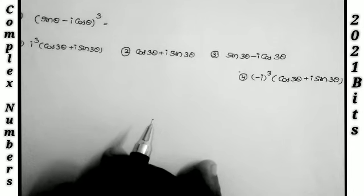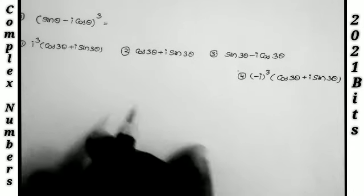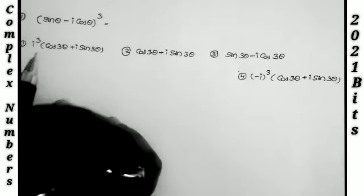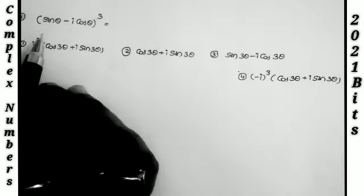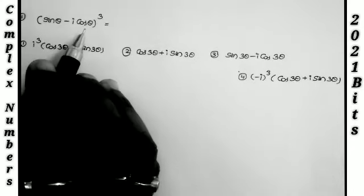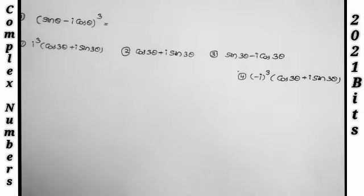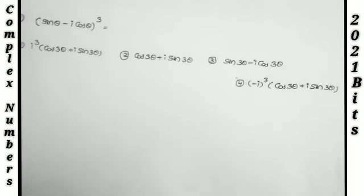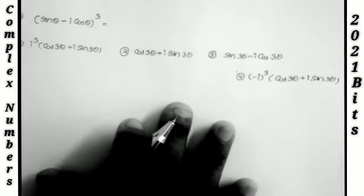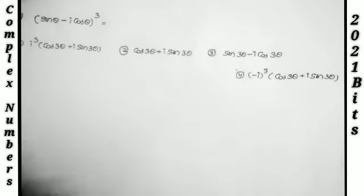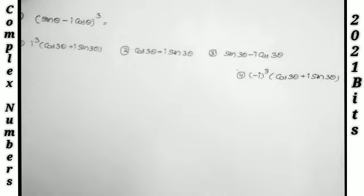The first problem: (sin θ − i cos θ)³ is equal to what? We need to find the answer. So first I take the expansion of this one.